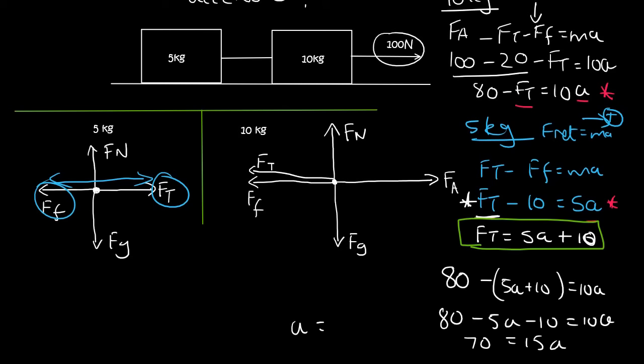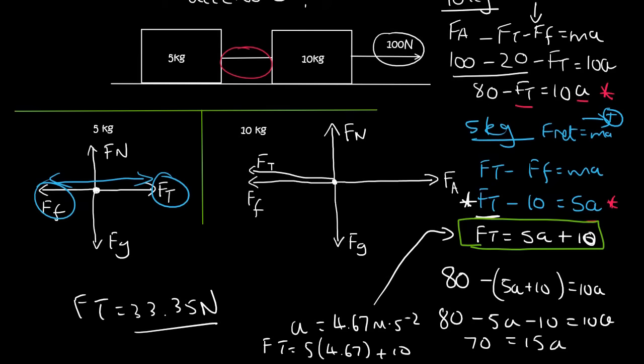And if you get a by itself you end up with 4.67 meters per second squared. I could then go calculate the tension by plugging that answer back into this. And so the tension force would be equal to 5 multiplied by 4.67 plus 10. And so the tension force in the rope will be 33.35 Newtons. So the tension force is the same in the rope. So it's 33.35 newtons pulling this object that way and it's 33.35 newtons pulling the object that way over there.